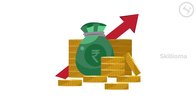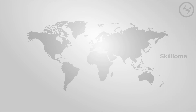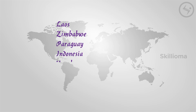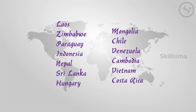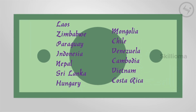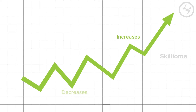However, this does not mean the Indian currency is the lowest in power. There are 13 countries with currencies weaker than the Indian rupee: Laos, Zimbabwe, Paraguay, Indonesia, Nepal, Sri Lanka, Hungary, Mongolia, Chile, Venezuela, Cambodia, Vietnam, and Costa Rica. Note that we haven't mentioned specific rates because these currencies keep fluctuating — the rates today might not be the same tomorrow; sometimes they increase, sometimes they decrease, all depending on the supply and demand of foreign currencies.